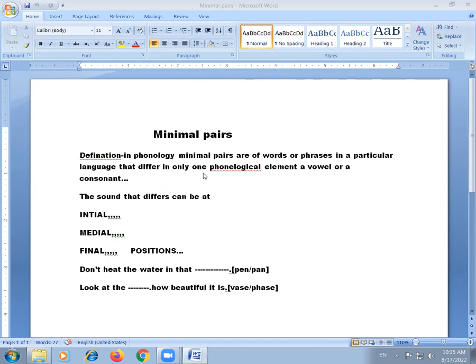In English, the alphabet is divided into only two types: vowels and consonants. Phonology means how we can pronounce. The sound difference can be at initial, medial, and ending positions.